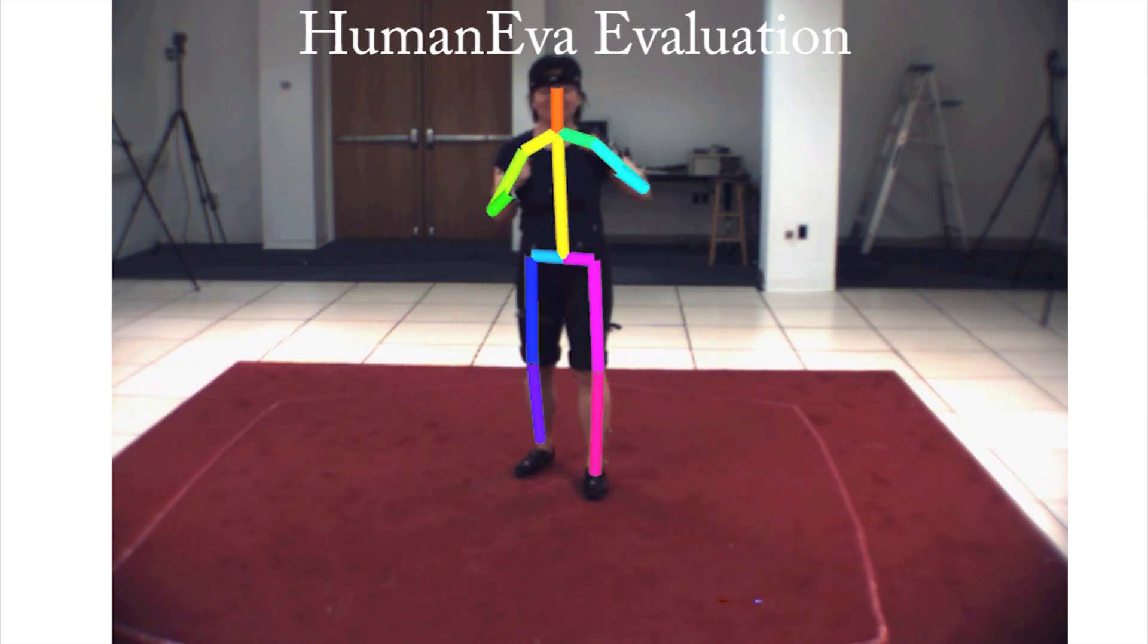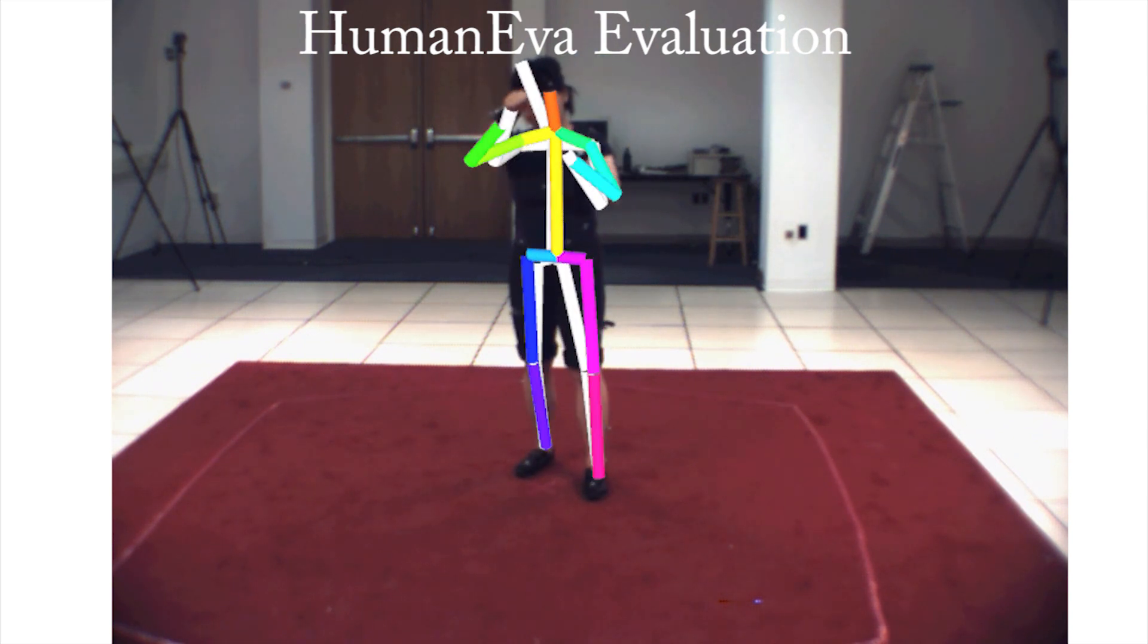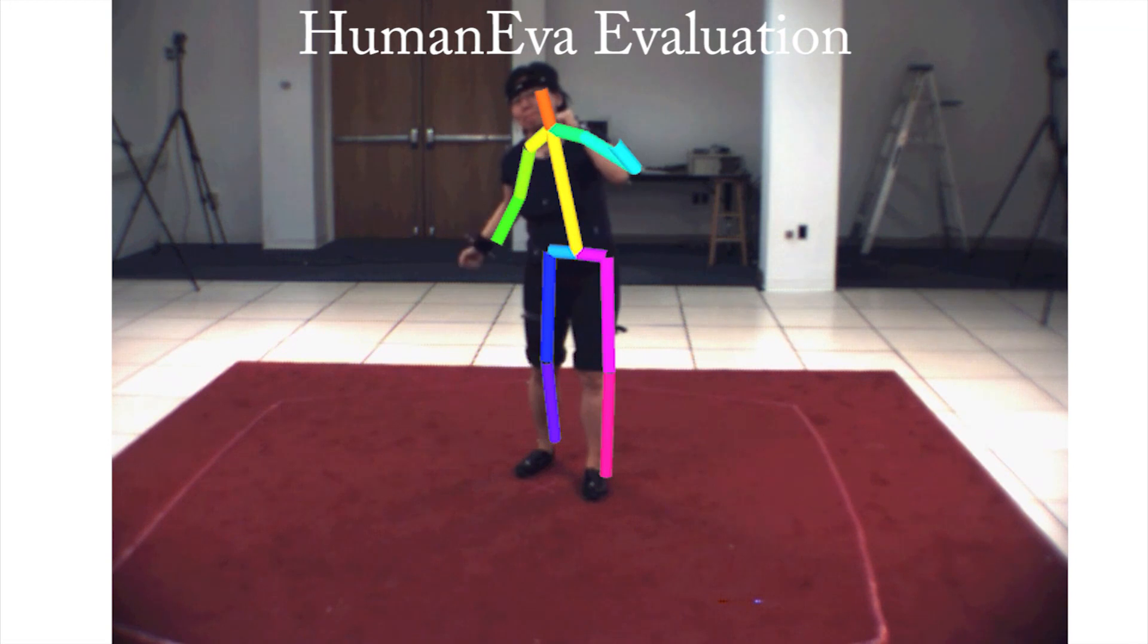Here a small temporal Gaussian smoothing is applied to remove the temporal jitter. The ground truth is shown in white.